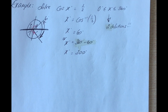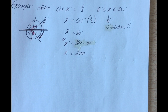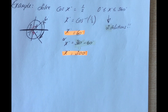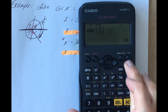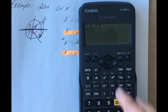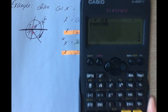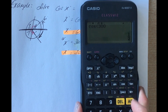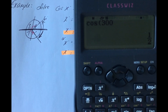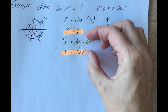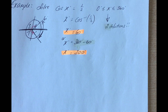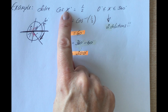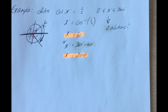So there are our two solutions: 60 degrees and 300 degrees. We can check both: cos 60 is a half, and cos 300 is also a half. There are my two solutions in the standard period where cos of each angle equals a half.